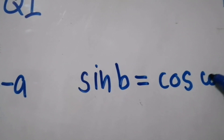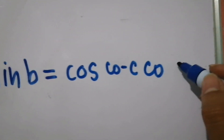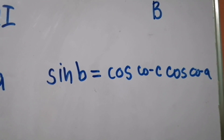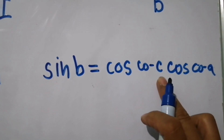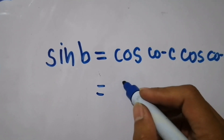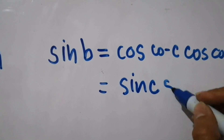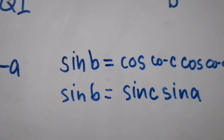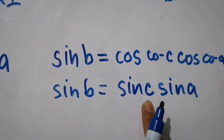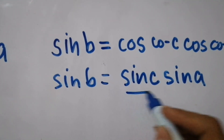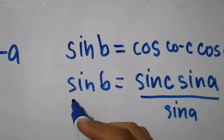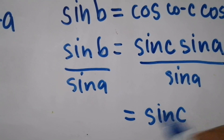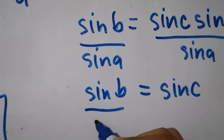We can rewrite cosine of co-c as sine c, and cosine of co-A as sine a. So we have: sine b = sine c × sine a. Dividing both sides by sine a, we get: sine c = sine b / sine a.